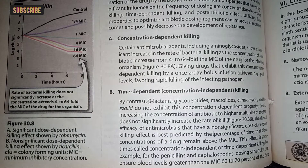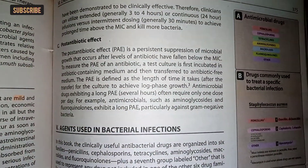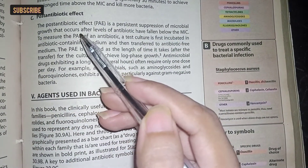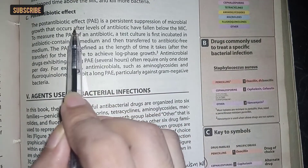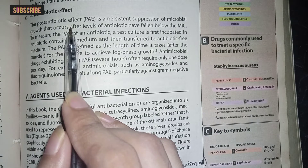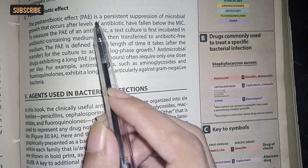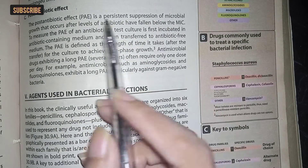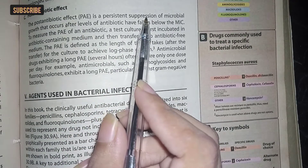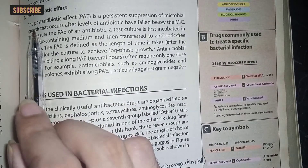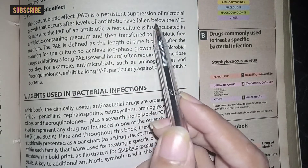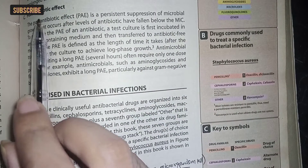Next ہمارے پاس آ جاتا ہے post-antibiotic effect (PAE)۔ Post-antibiotic effect میں یہ بتایا ہے کہ جب drug کی minimum inhibitory concentration سے level low ہو جاتی ہے، تب بھی کیا suppression activity ملے گی؟ Post-antibiotic effect is a persistent suppression of microbial growth that occurs after the level of antibiotic has fallen below the MIC۔ مطلب یہ persistent suppression microorganism کی growth کو روکے گی یہاں تک کہ drug کی concentration MIC سے بھی کم ہو جائے۔